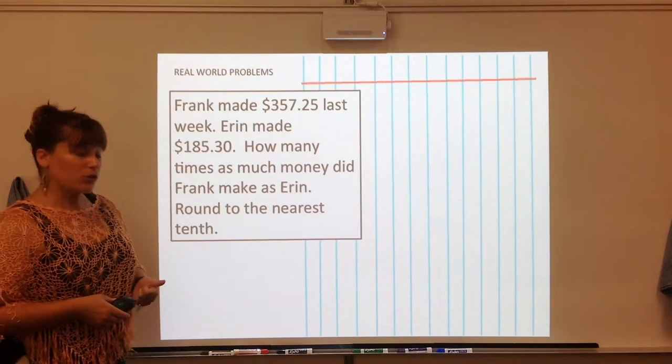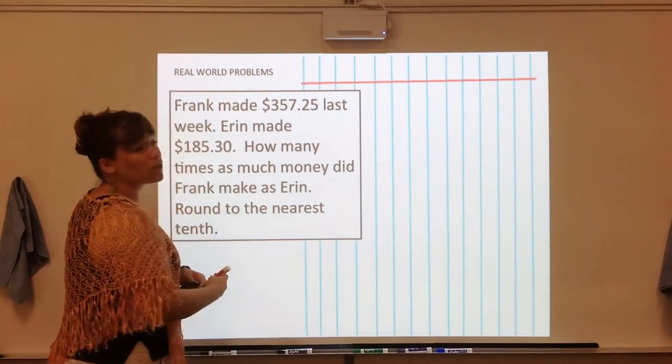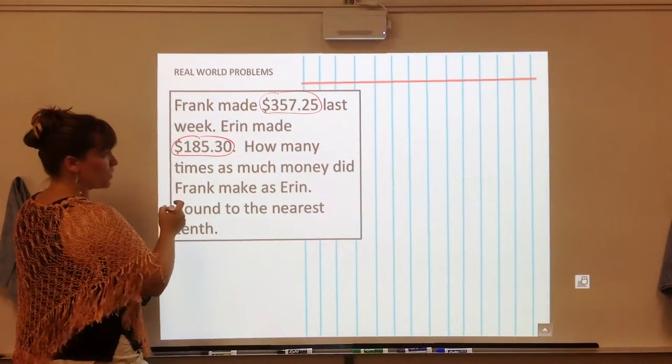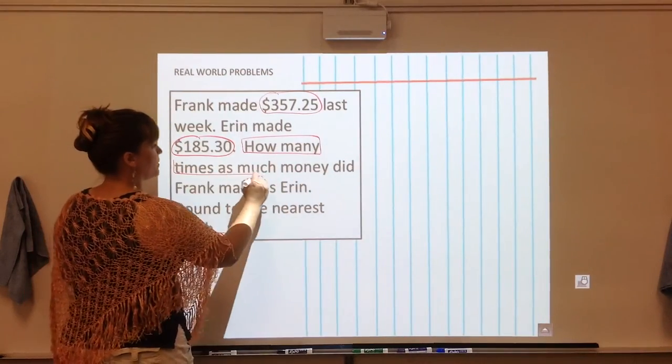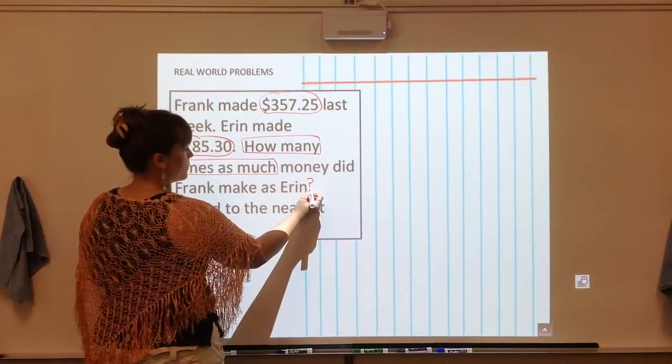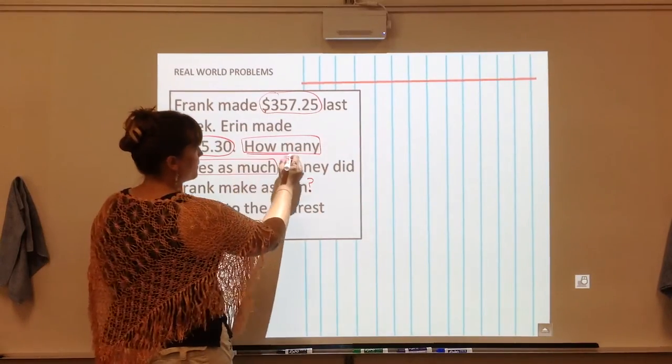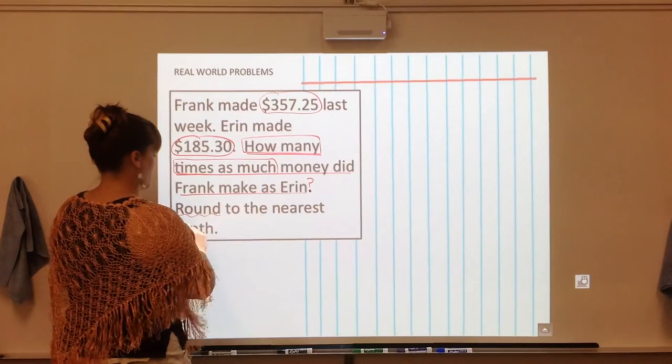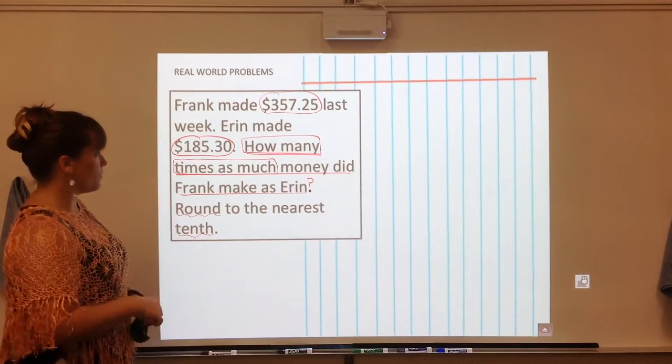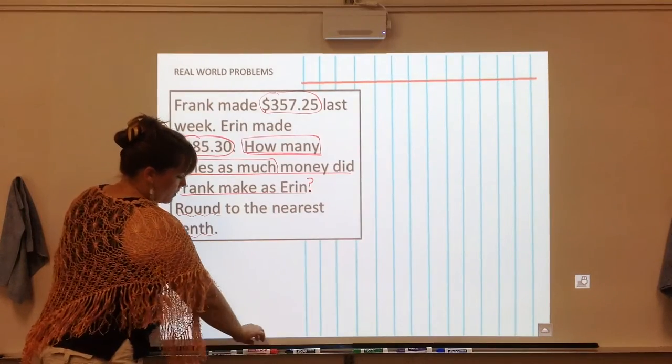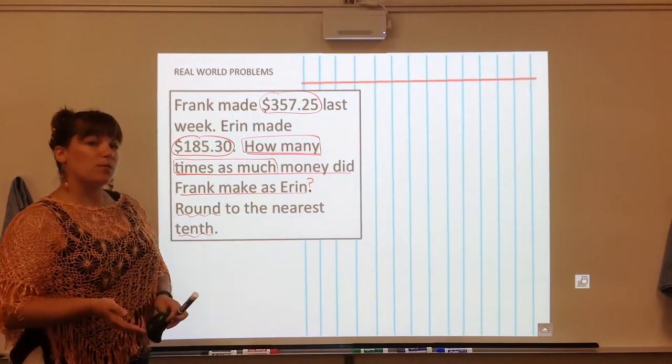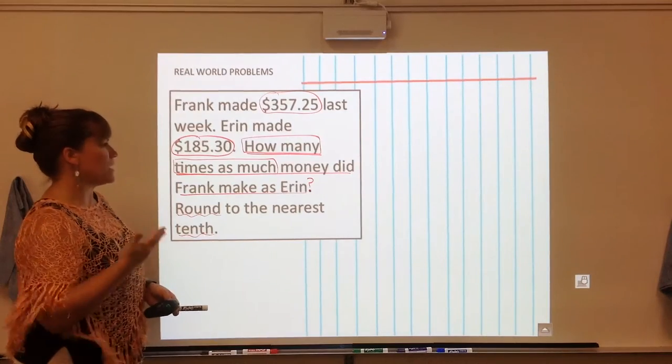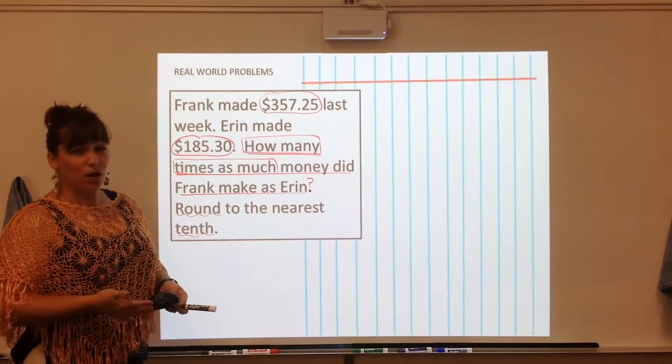So with this word problem hopefully you used CUBES so I'm going to mark up my problem with the important numbers being circled. The keyword how many times as much. The question is actually a typo, sorry I forgot my question mark, but this is the entire question that we have to do and we are going to be rounding to the nearest tenth place so that's important to remember. Now the trick for these word problems is figuring out which number is the dividend and which number is the divisor.